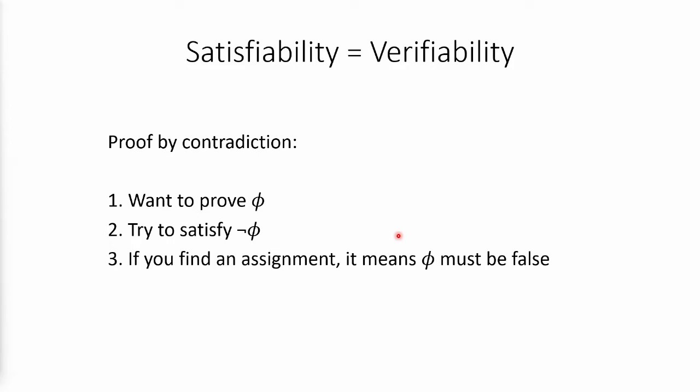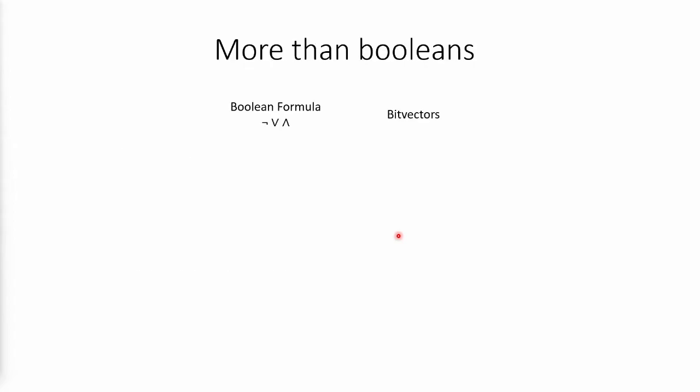But in real world applications, we want to reason about more than just booleans. We want to reason about numbers or floats or lists and stuff like that. A naive approach would be to use bit vectors. So the computer encodes everything in binary, right? Why not just express that binary as a boolean formula?